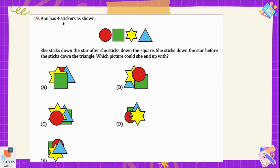Question number 19: Ann has 4 stickers. She sticks down the star after she sticks down the square, and she sticks down the star before she sticks down the triangle. Which picture could she end up with? She pasted the square first and then after that she sticks the star. In options A and B, the square is pasted after the star, which is not right. So we consider options C, D, and E.